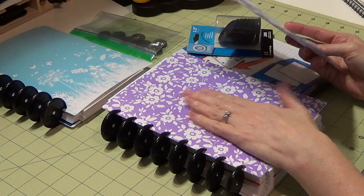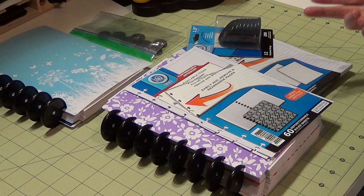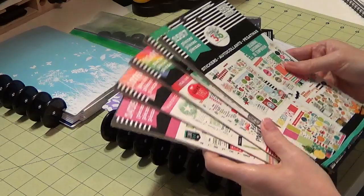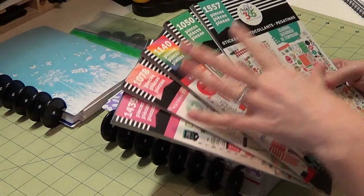This video is to show you that I have been purchasing some of the Me and My Big Ideas planner sticker books. These are the bigger books that have over a thousand pieces. There's 30 sheets for each pack and then however many stickers are in each pack vary. These are the five that I have. There's three more on my list that I want to get.